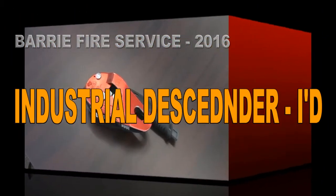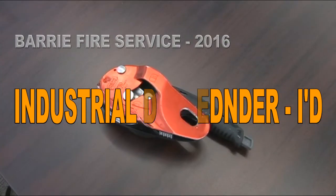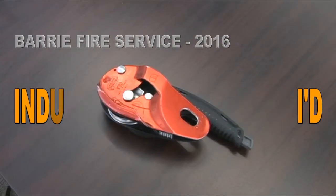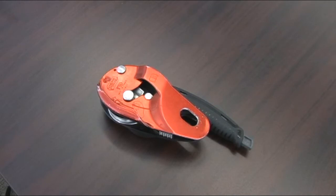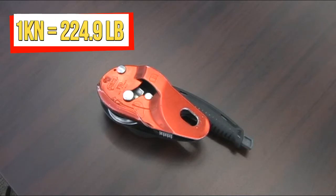Let's take a look at the Petzl ID, ID standing for Industrial Descender. This is a descent control device made by Petzl to conform to the NFPA 1983. She is 22 kN strong or 5,000 pounds.